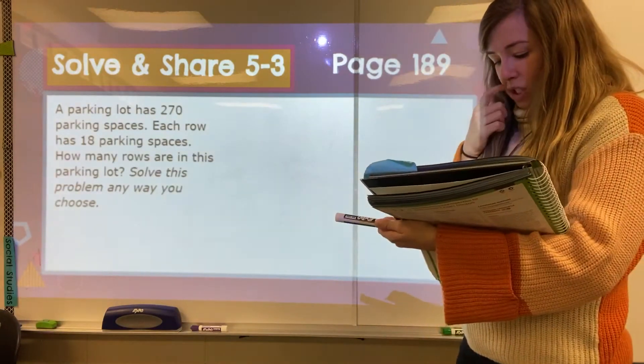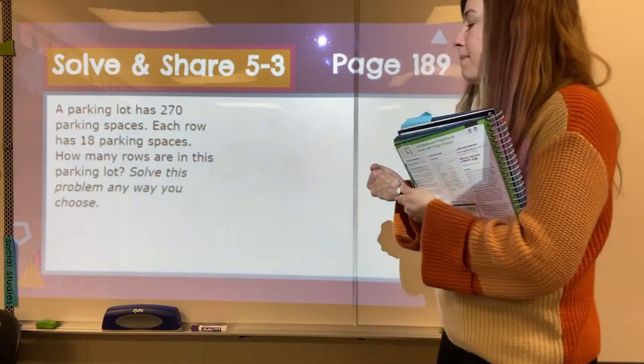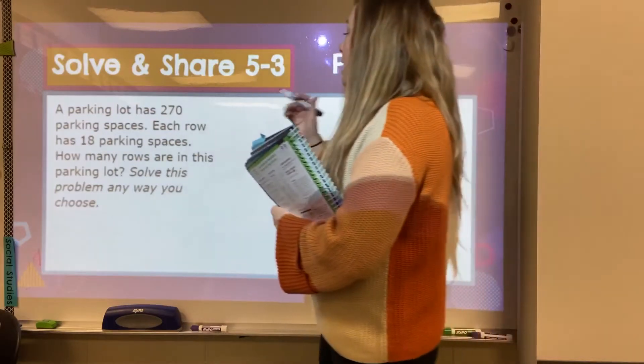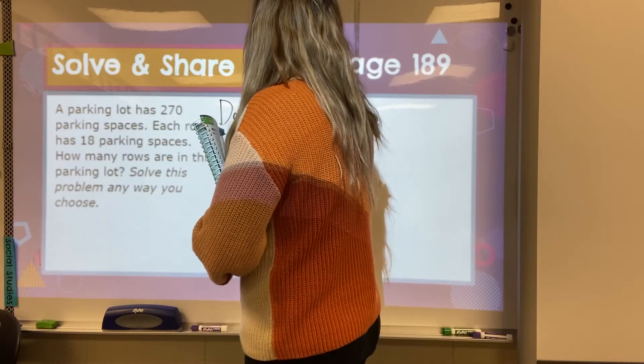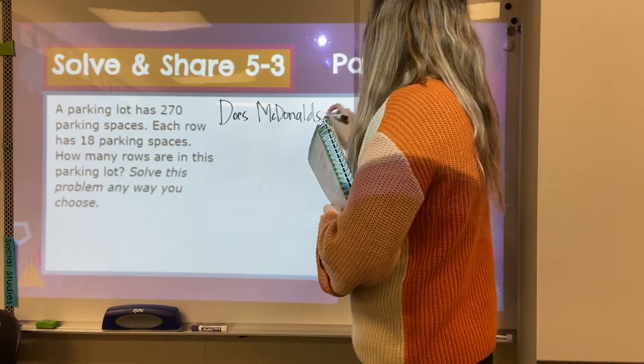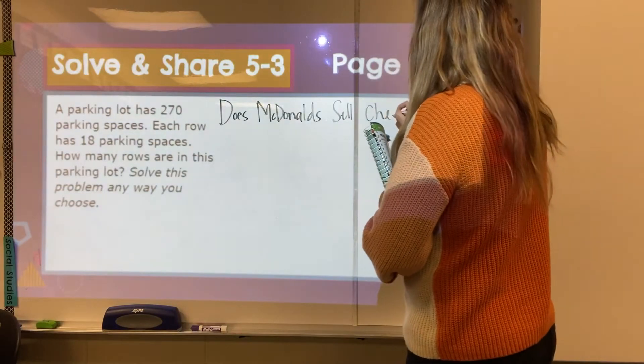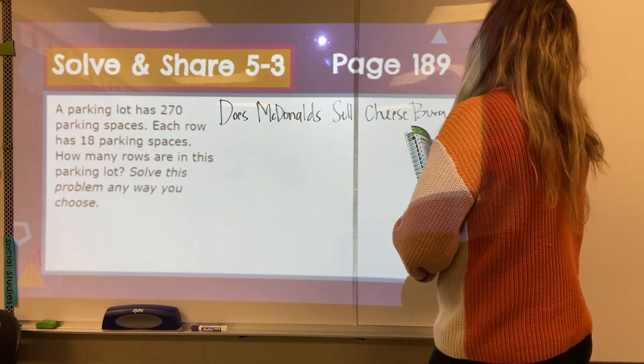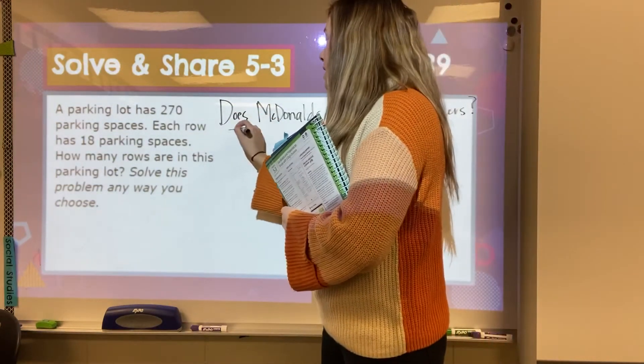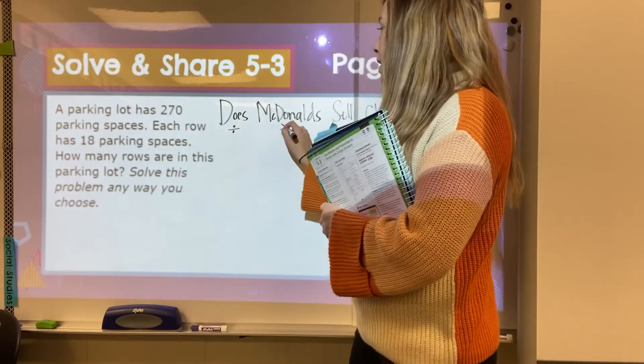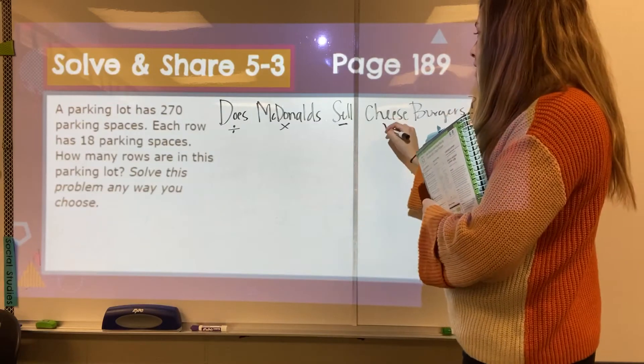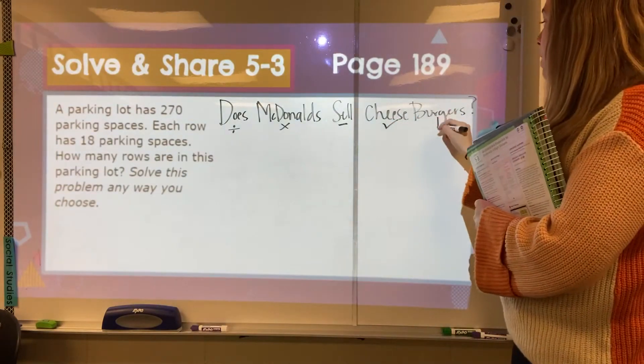Okay, well we need to divide our number and you can use that grid or we can just work through our division steps. So what I'm going to introduce to you is our does McDonald's sell cheeseburgers. And obviously yes, McDonald's sells cheeseburgers. But our D stands for division. Our M stands for multiplication. Our S stands for subtraction. Our cheese stands for check. And our burgers is bring down.